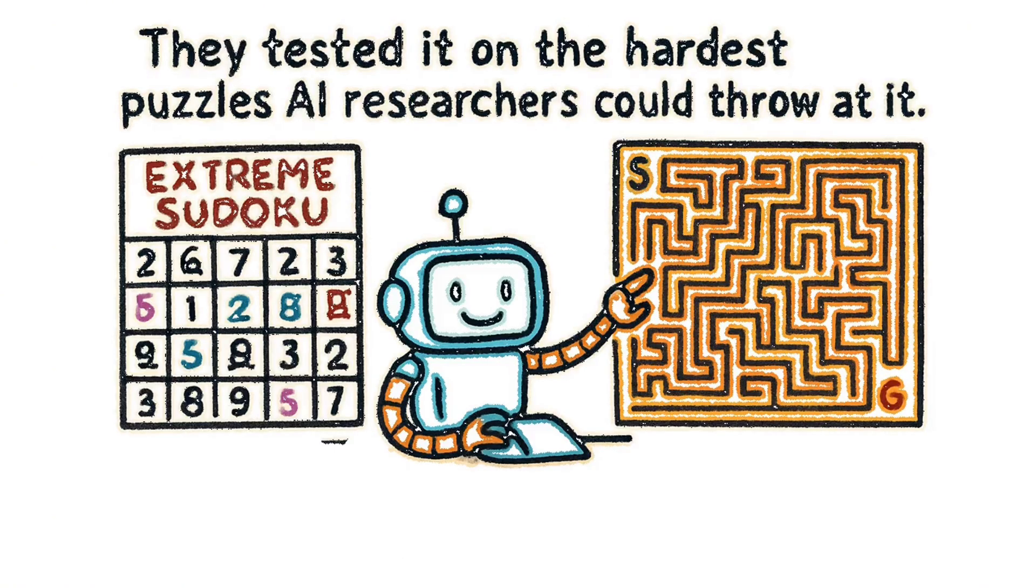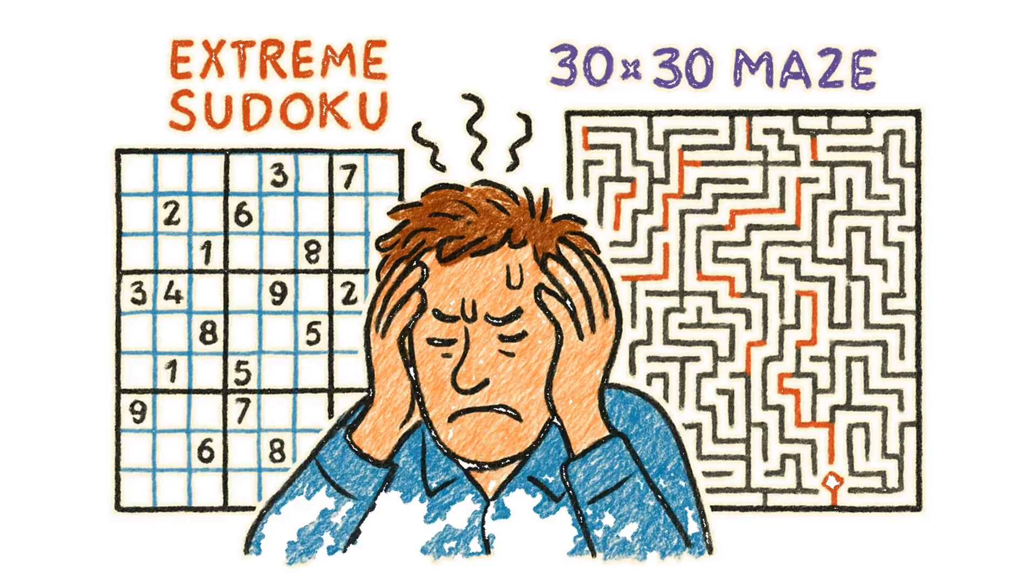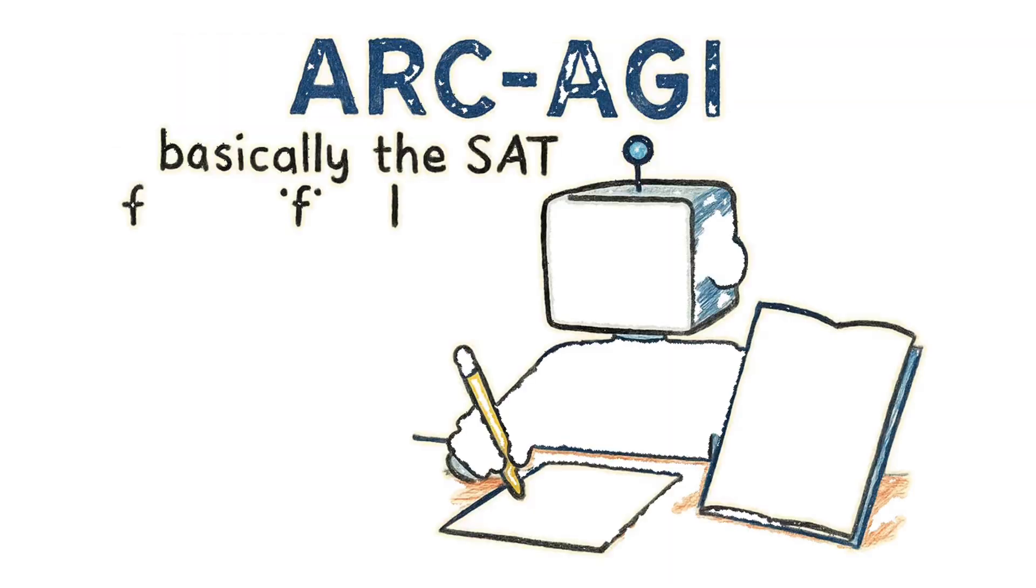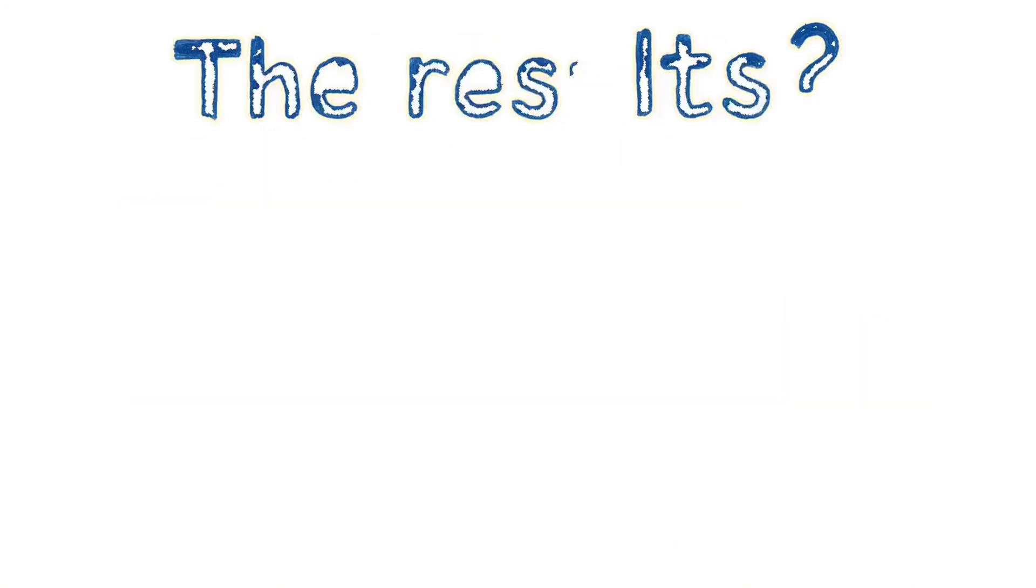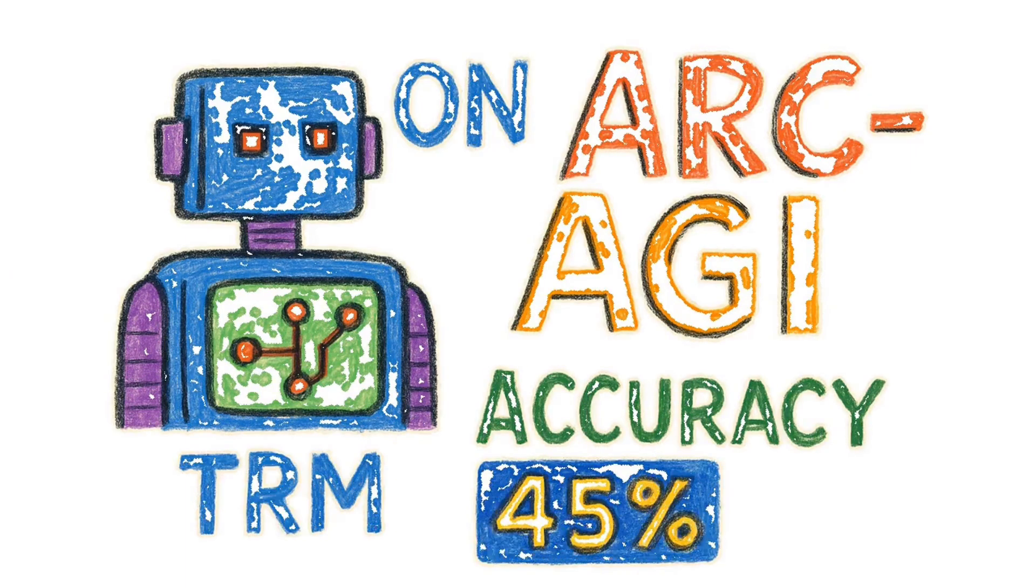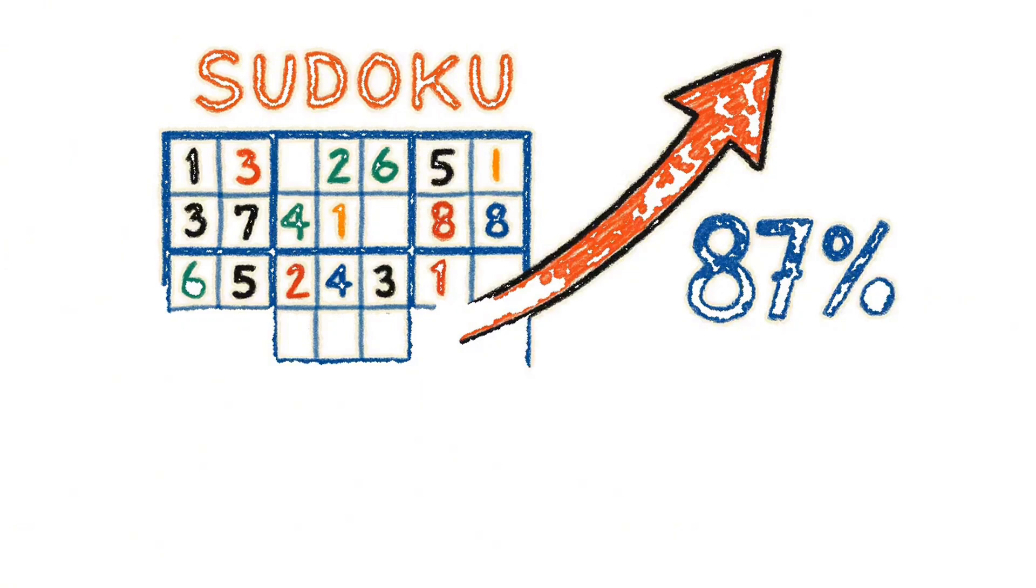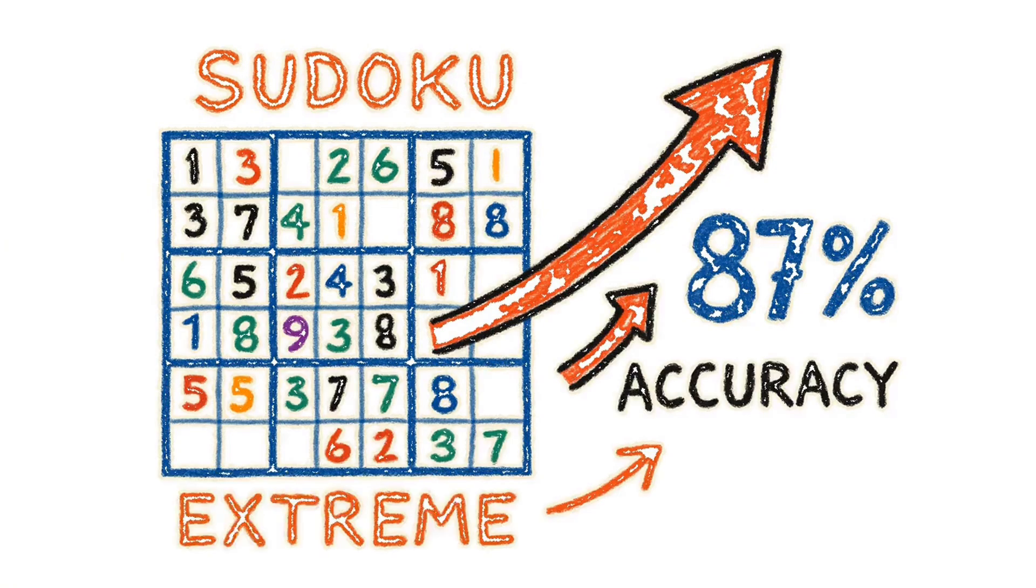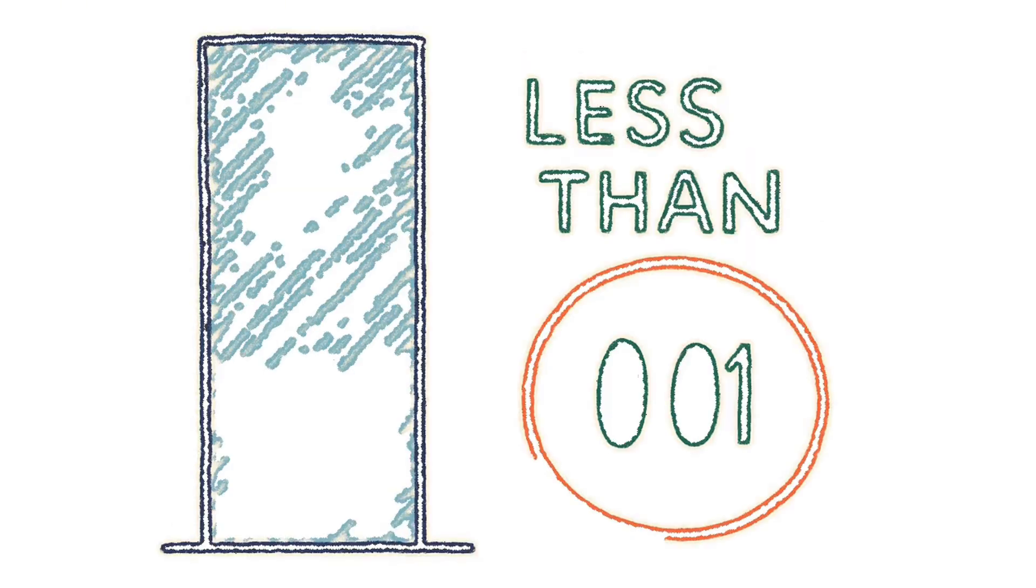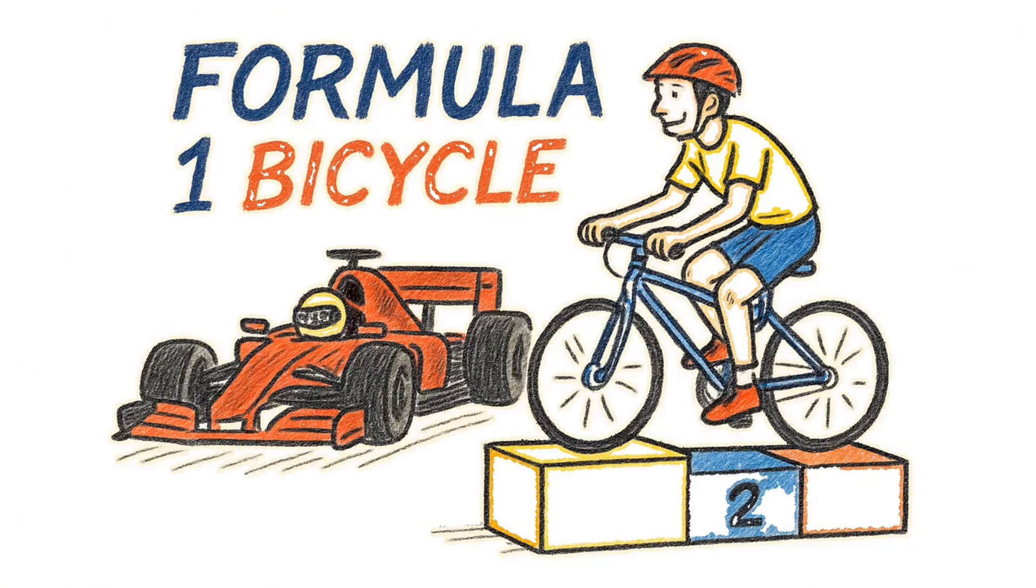So what did this little guy do? They tested it on the hardest puzzles AI researchers could throw at it. Extreme Sudoku, the kind that makes your brain melt. Complex 30 by 30 mazes where even GPS would give up. And the big one, ARCAGI. Basically the SAT for artificial intelligence. The results? On ARCAGI, TRM scored 45% accuracy. The billion parameter models couldn't even crack 35%. On Sudoku Extreme, it jumped from 55% to a staggering 87% accuracy. On mazes, 75% to 85%. And get this, it uses less than 0.01% of the parameters. That's not just winning. That's showing up to a Formula 1 race on a bicycle and still taking the podium.